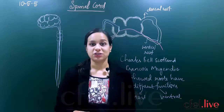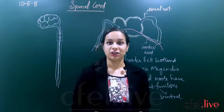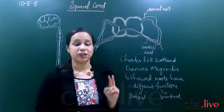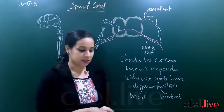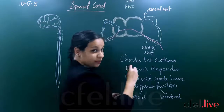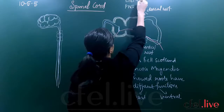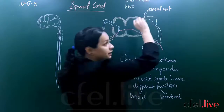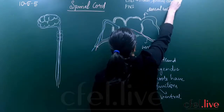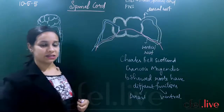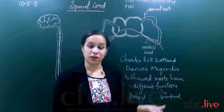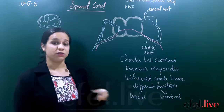So what did we see in our previous sessions? We discussed the very important structure of the central nervous system. We have seen that the nervous system in our body is divided mainly into two different types: the central nervous system or the CNS and the peripheral nervous system, the PNS.